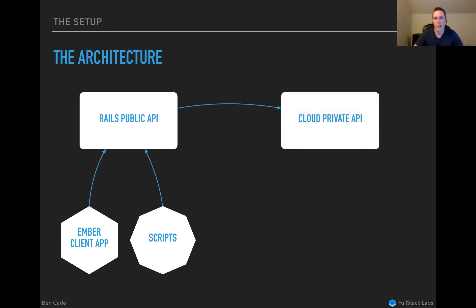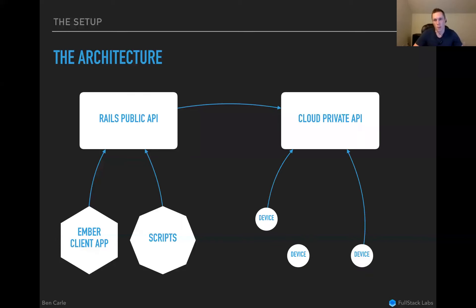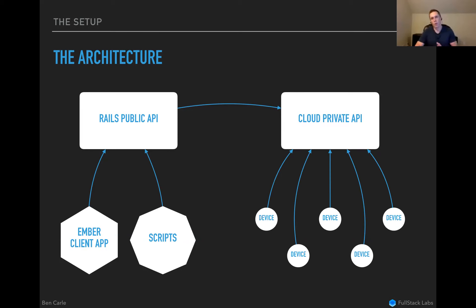Behind that there is another cloud application with a private API — sort of the main contact point between the public API and the devices. We also have devices out there in the world talking to this back-end piece. This part wasn't really relevant to the attack because it's a private, secured API, but it gives a full picture of the system.